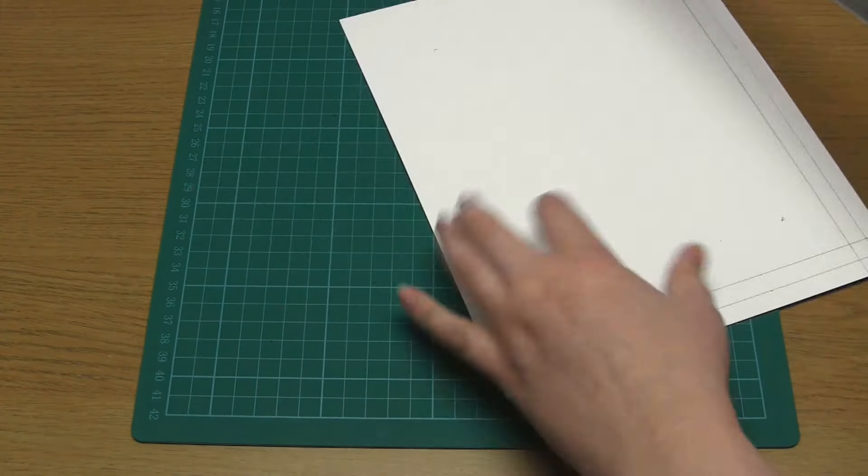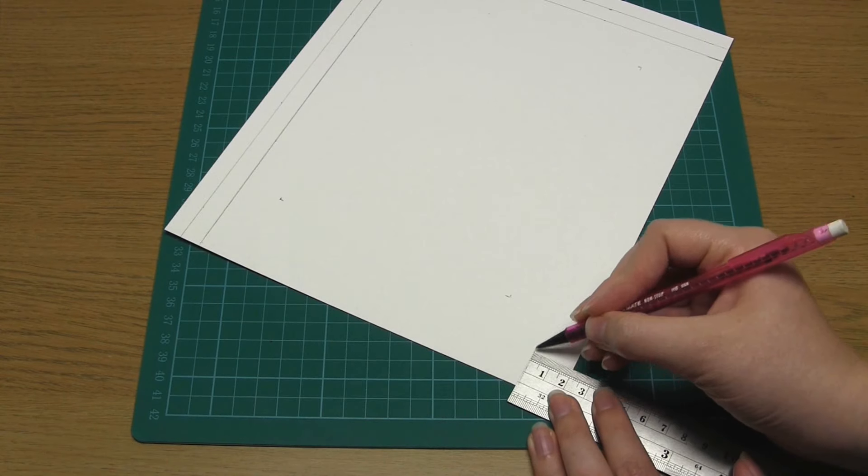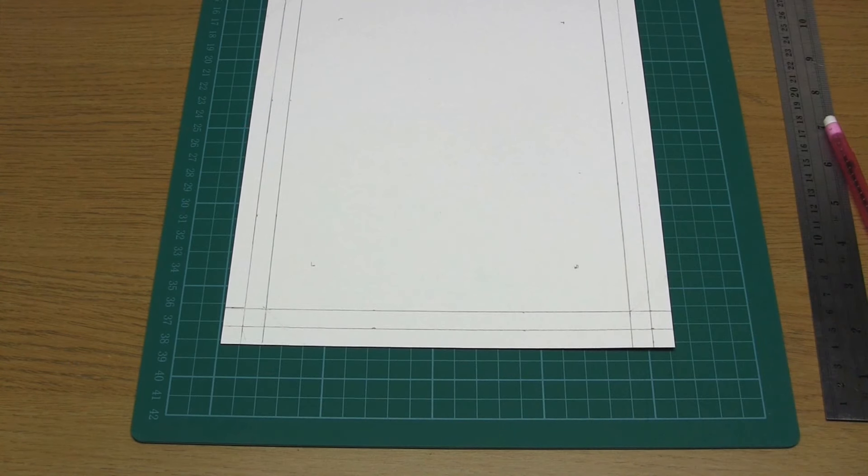Then carefully use an exacto knife and a ruler to score along these lines to make them easier to fold.